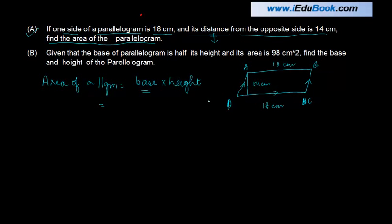So base, let's say it is CD, is equal to 18 cm into height. Height is basically the distance between these two sides which is given to you as 14 cm. Once you've got these two numbers then it just becomes a matter of calculation.